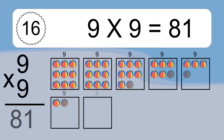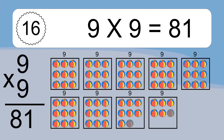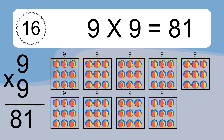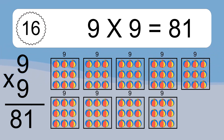9 times 9 equals what? 9 times 9 equals 81. We have 9 boxes, and each box has 9 colorful balls inside. If you count all the balls in all the boxes together, you will have 9 times 9 balls. This equals 81 balls.